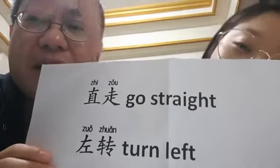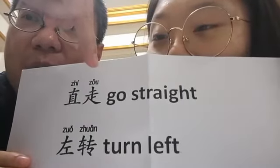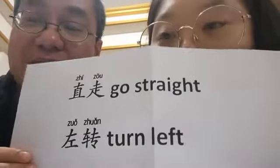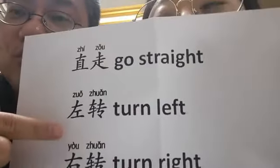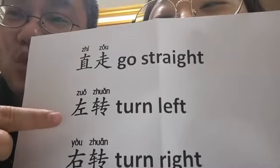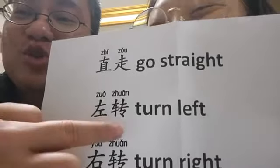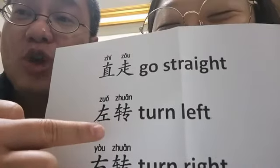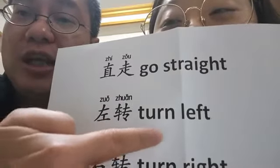直走 is a little bit hard to pronounce, so I will do that again: 直走. Go straight. Abby, what's the next one? 左转. 左转 means? Turn left.